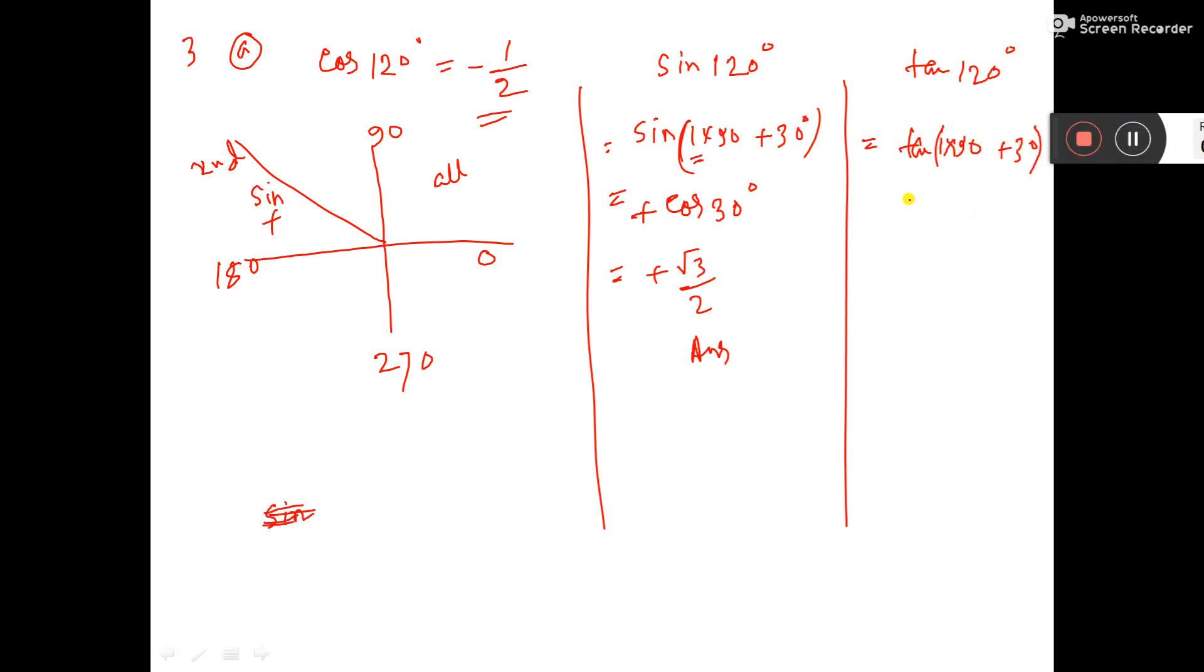Okay, this one you see, 1 into 90 plus 30. So tan will be cot 30 degree.